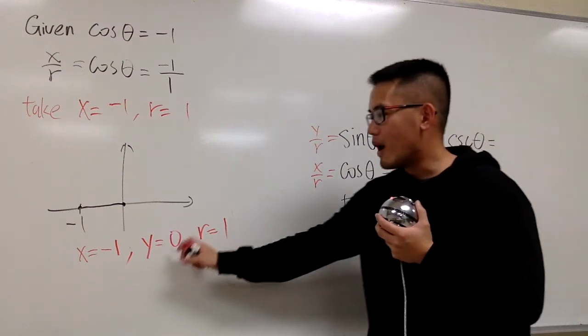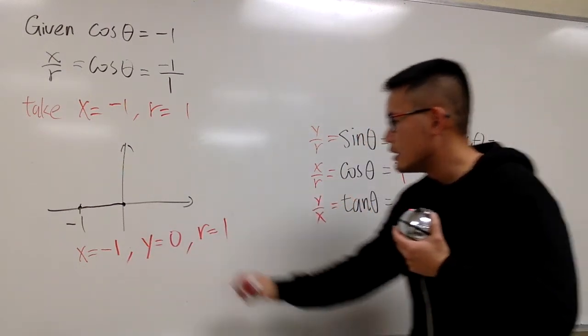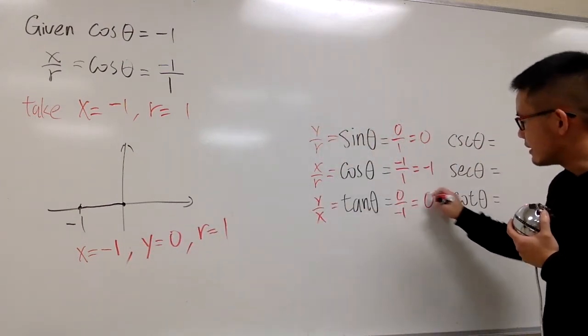Now, tangent theta, y over x. So let me just write this down. y over x, 0 over negative 1. Yeah, I can say this is 0.